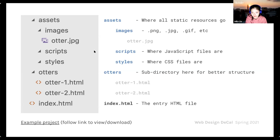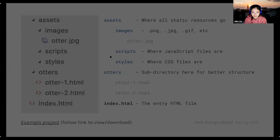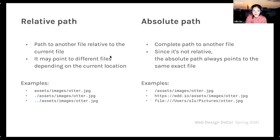The index.html is really important because everything shown on the website starts from it — you route to images, stylesheets, and everything else from index.html. So make sure it's located in the root of your directory. When coding in index.html and referencing other files, there are two ways to refer to those files: relative path and absolute path.